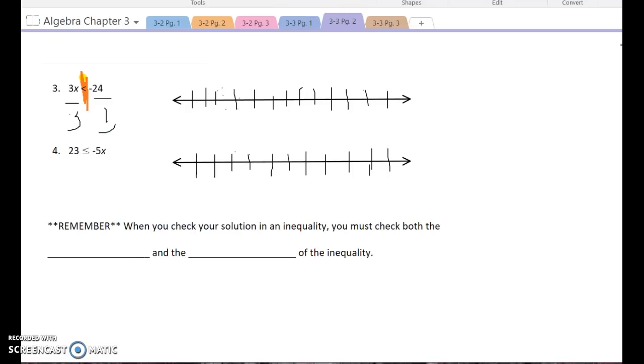So three divided by three is x. And then negative 24 divided by three is negative eight. But again, I did not divide by a negative number. I divided by a positive. So I'm going to keep my less than symbol. So I get x is less than negative eight.